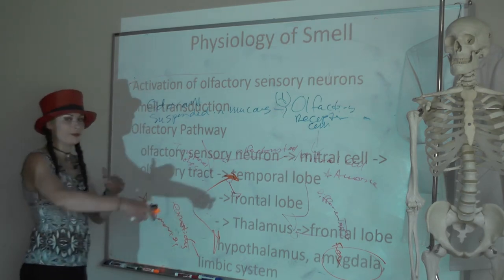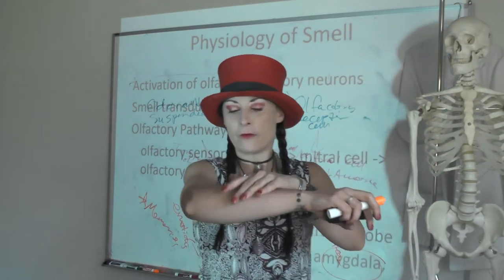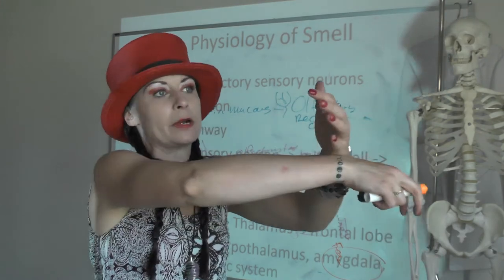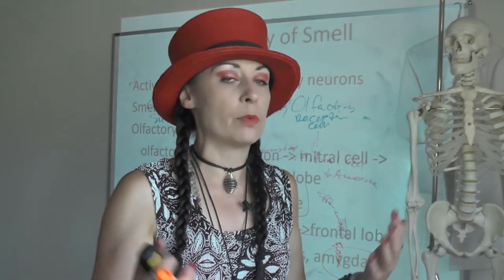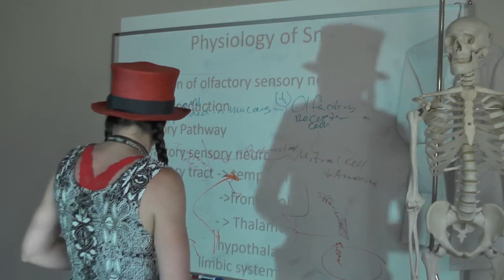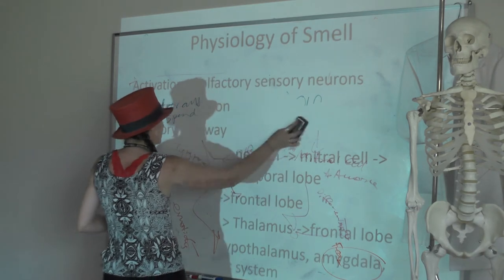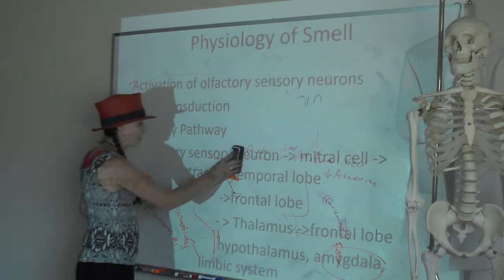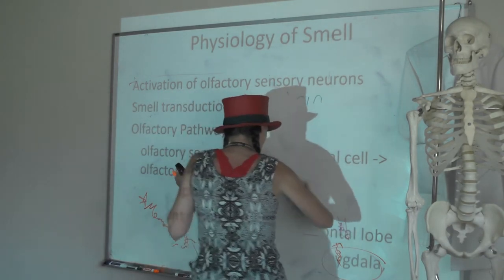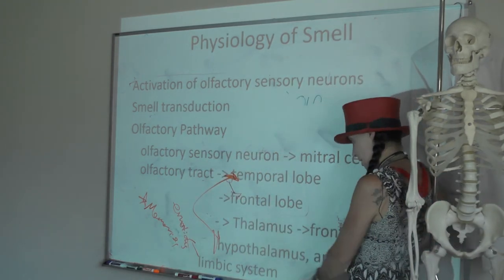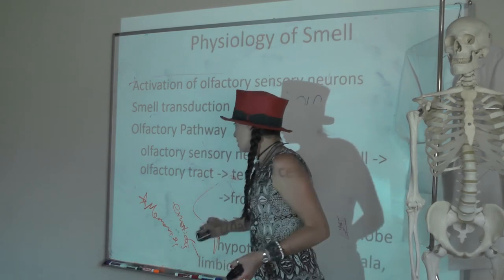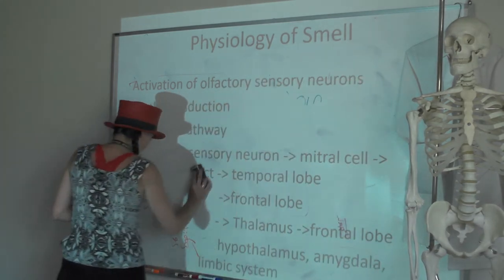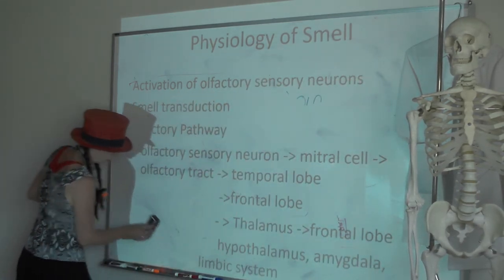Smell is such a potent trigger of memories because it's processed in all of these regions. You feel fabric on your skin from pretty much the time you're born and there's no specific memory attached, but if you haven't smelled banana bread in years and you walk into a house where somebody's baking it, that smell will zoom you back to your grandma's kitchen. Smell is so potently associated with emotions and memory formation — and you don't even have to go through the thalamus to be aware of it.